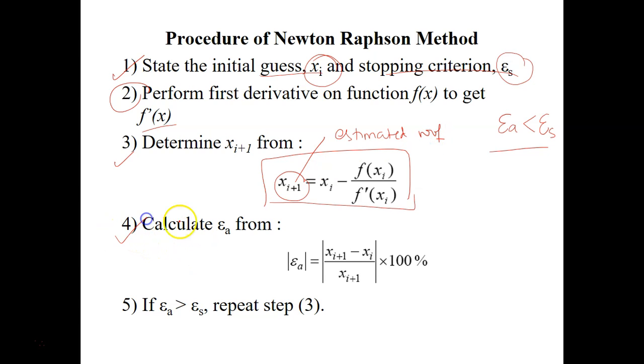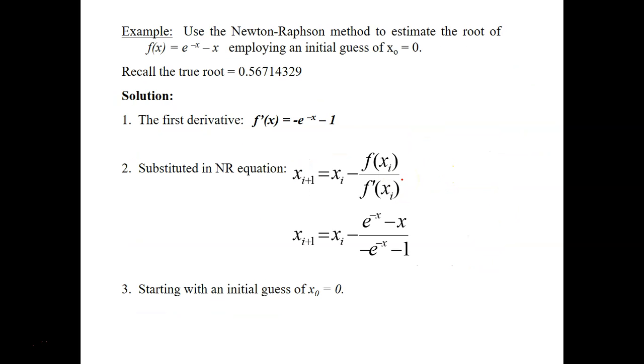And then the next one is calculate ea from this equation. And if your ea is more than your es, you need to go back to your third step to calculate a new value of root for the next iteration. Okay, so it's similar to the previous chapter. It's iterative. It uses this ea. It's similar. The difference is only at the formula.